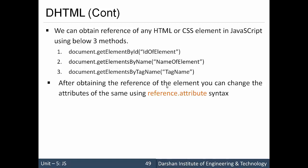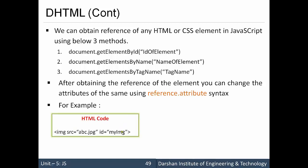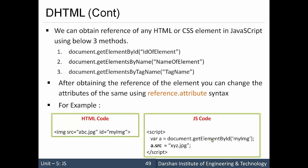When we do it practically, you will understand it better. For example, we have one image with the id 'MyImage'. When we get the reference of that particular element using document.getElementById('MyImage') and store it in reference variable 'a', with the help of this reference we can access all its attributes.